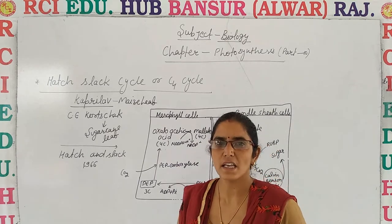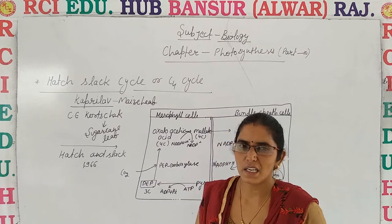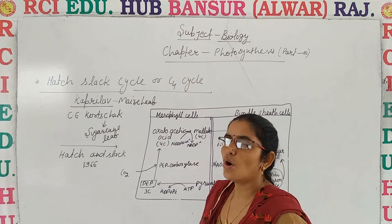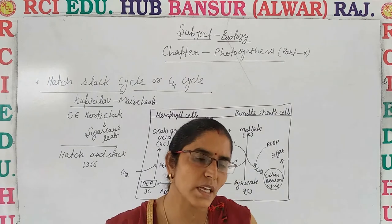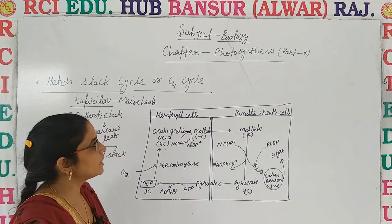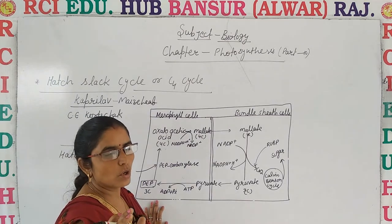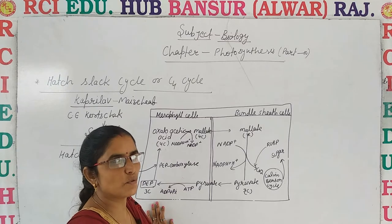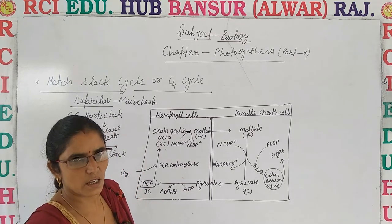In the Hatch-Slack cycle, what happened? According to this cycle, Hatch-Slack explained that instead of PGA — Phosphoglyceric Acid, which is formed as a stable compound in the C3 cycle — in this C4 cycle, another stable compound is formed. Instead of PGA, Oxaloacetic Acid is formed. That's why it is given the name C4 cycle.